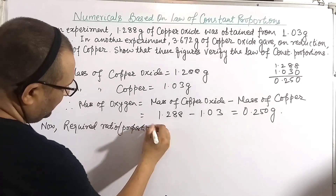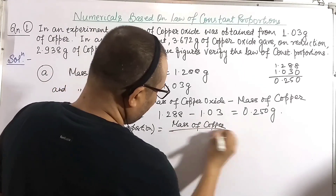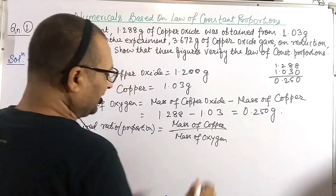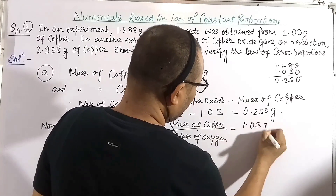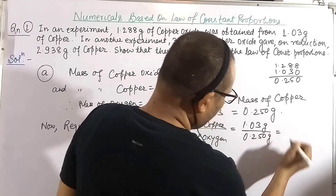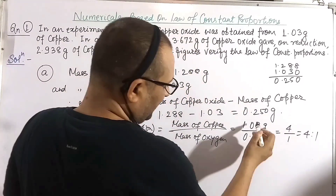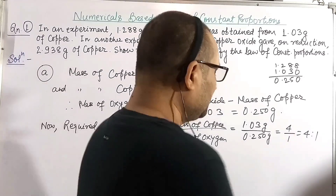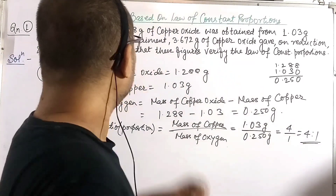Now the required ratio, or proportion, equals mass of copper upon mass of oxygen = 1.03 / 0.250, which gives a value of nearly 4:1. So the ratio is 4:1 for the first experiment. Now let us discuss the second experiment.